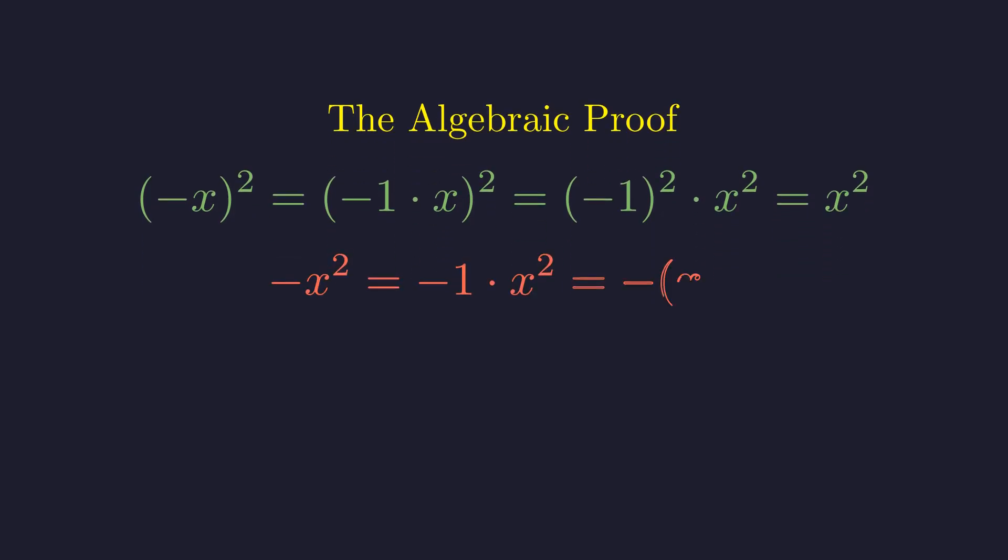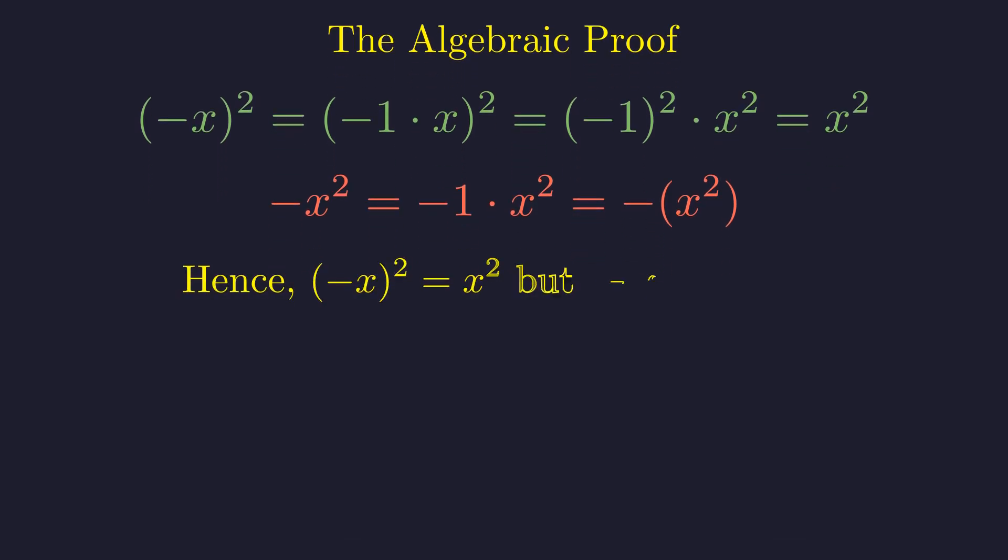But without parentheses, only the x gets squared. The negative sign stays outside and gets applied to the result. So we can see that these expressions are genuinely different. One always gives you a positive result. The other always gives you a negative result.